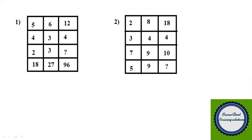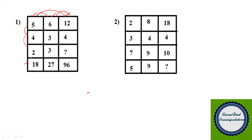Moving to question three: here you have two sub-questions. I will solve the first problem and the second is for you to work out — try to pause the video for 10 seconds after I complete the first problem. For these table-type puzzles there might be a relationship between columns or rows. The trick is to always look at the greater number, because the pattern is hidden there. Here I have 18, 27, and 96, and I have to find the question mark.